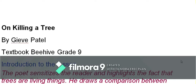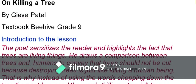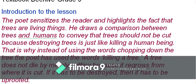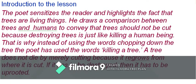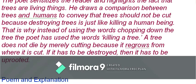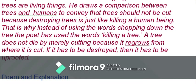This is about 'On Killing a Tree' by Gieve Patel, a poem in the textbook Beehive, the Class 9 textbook. The poet sensitizes the reader and highlights the fact that trees are living beings. He draws a comparison between trees and humans to convey that trees should not be cut down, because destroying trees is just like killing a human being.